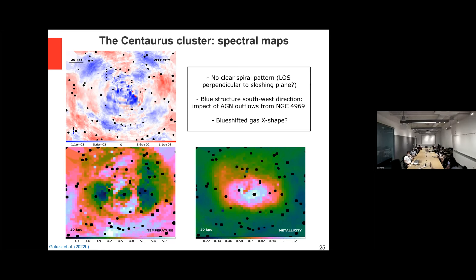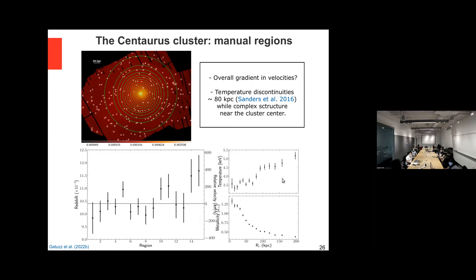We measured the velocity structure by extracting spectra from circular regions moving away from the cluster core. Similar to the Virgo cluster, we have an increase in velocity as we move away from the cluster core — this kind of velocity gradient is characteristic of gas sloshing. From temperatures and metallicities we found a structure similar to what Sanders 2016 observed using Chandra data — a drop in metallicities and discontinuities in temperatures which have been found in previous observations.